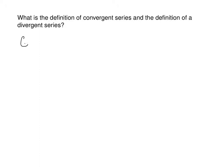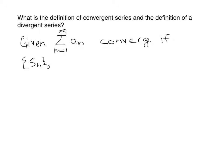Given a series — the sum from n equals 1 to infinity of a sub n — this will converge if the sequence of partial sums s sub n converges, where s sub n is equal to a₁ plus up to aₙ.